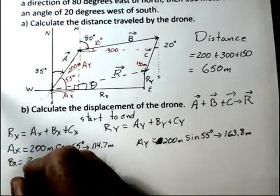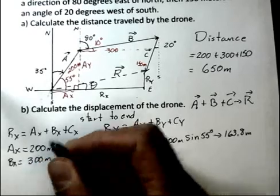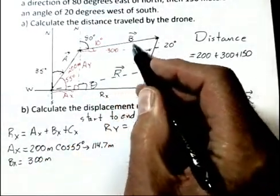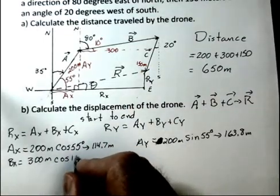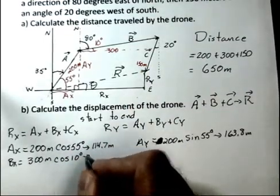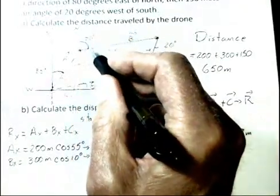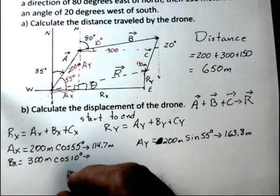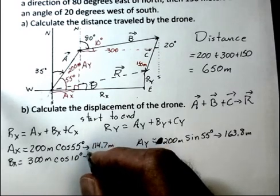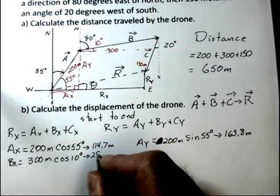Now the length is 300 meters. Vector B has a length of 300. The hypotenuse is 300 meters long. And the angle inside the triangle is 10 degrees. It's 80 degrees outside, so there's 10 degrees from the vector down to the x axis. And multiplying those together, I came up with 295.4.